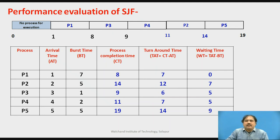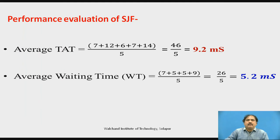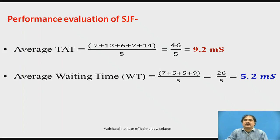We get different values of TAT for all processes and different waiting times from the Gantt chart. Normally, we measure performance with average TAT and average waiting time. For this example, the average TAT comes to 9.2 and the average waiting time is 5.2 milliseconds, or 9.2 and 5.2 time units.